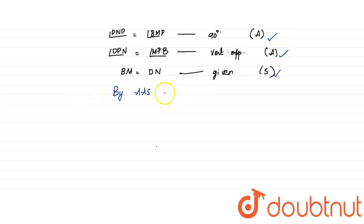By AAS, that is angle angle side axiom, we can say that triangle DPN is congruent to triangle MBP. If these both triangles are congruent, we can say that DP equals PB by CPCT.